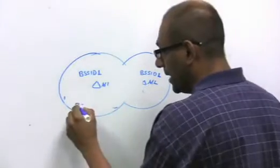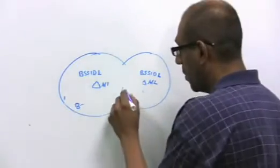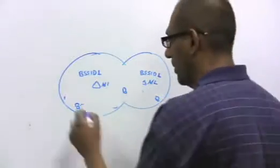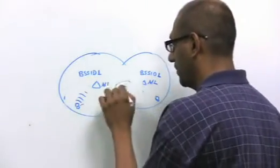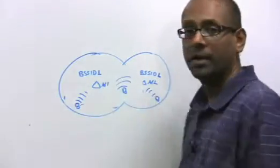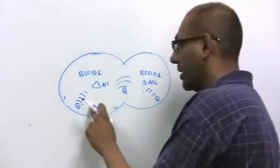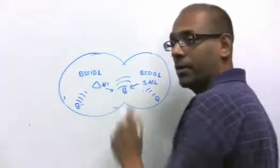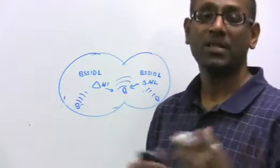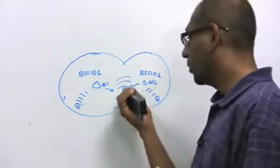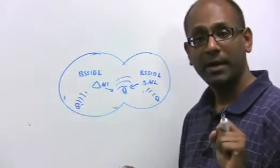Now whether the client is here, or here, or here, when it seeks the presence of access points, what does it hear? It hears only BSSID 1. Whether there's a single AP responding to it, or multiple APs responding to it, they all respond with the same wireless MAC address, the same BSSID. Now notice, you took the decision-making transparently away from the client.